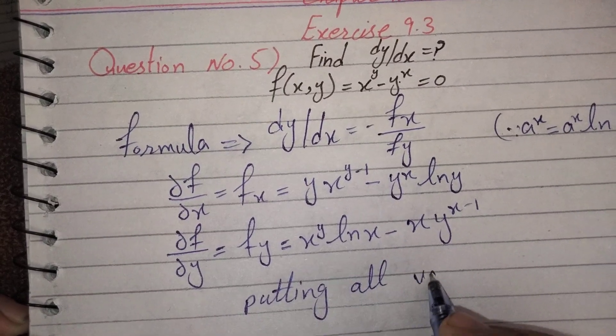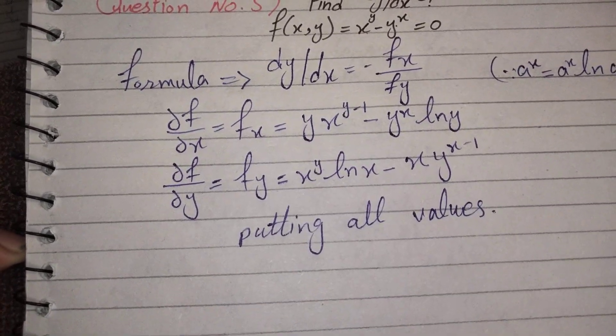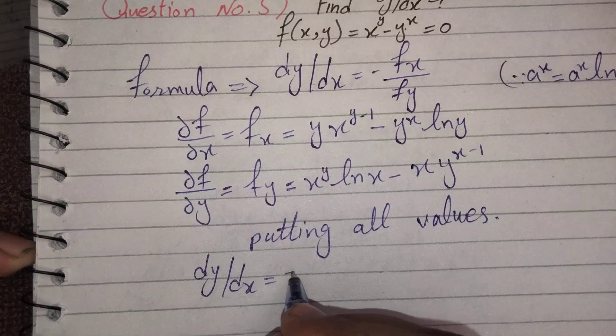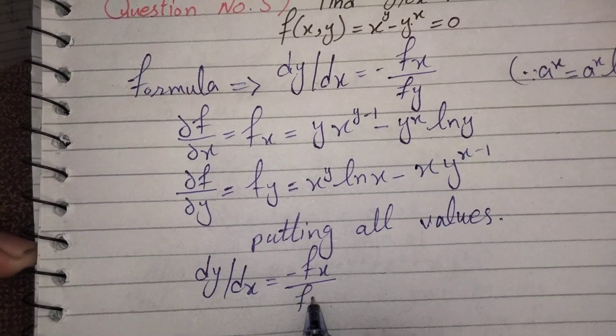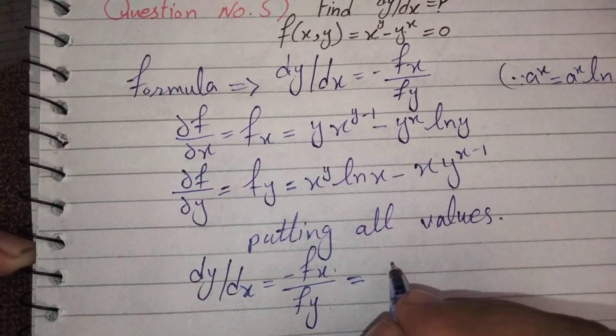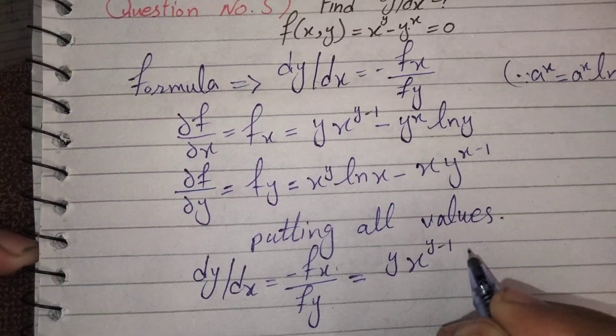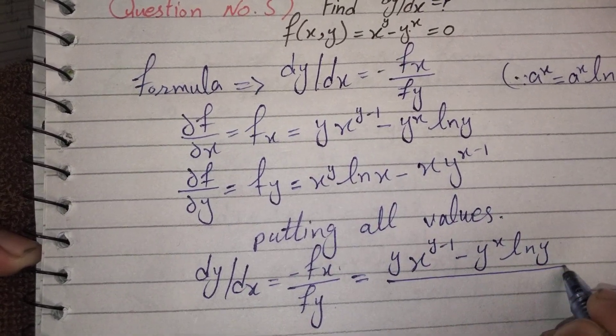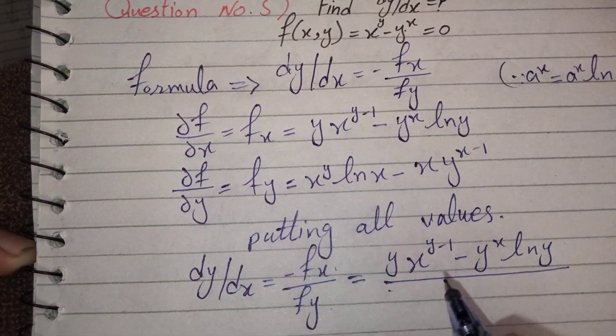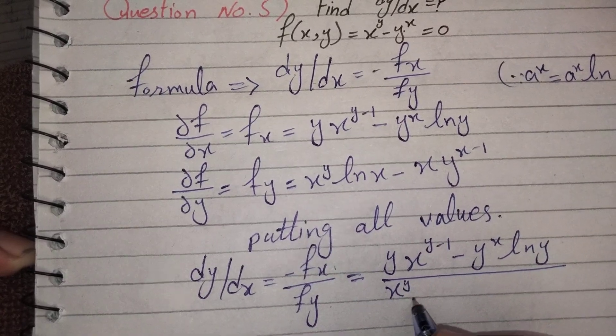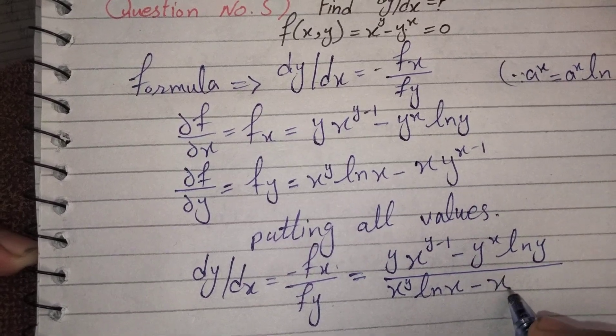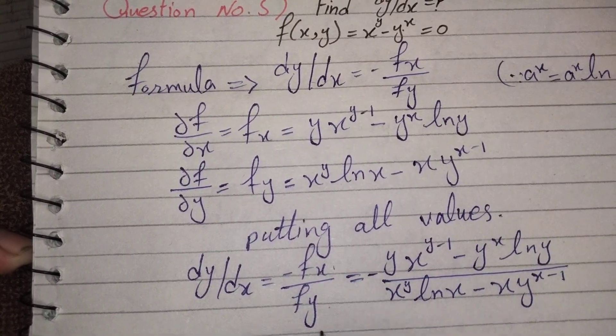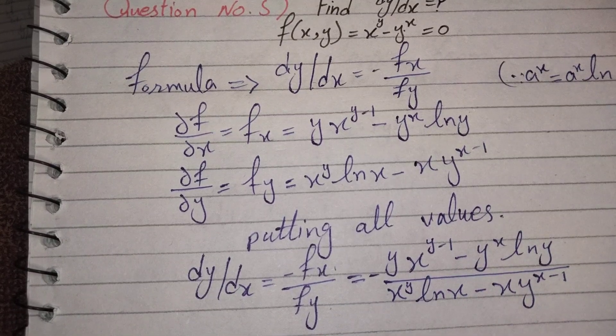Putting all values in this equation, dy/dx is equal to minus fx over fy. fx is yx^(y-1) - y^x log y over fy which is x^y log x minus xy^(x-1). We can simplify this further but this is sufficient. Thank you.